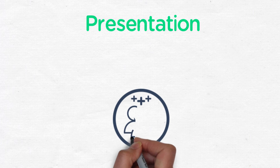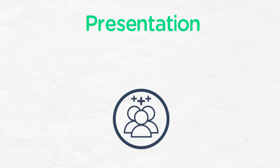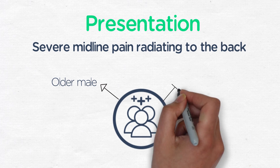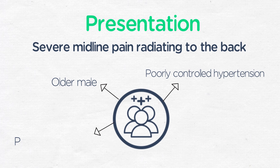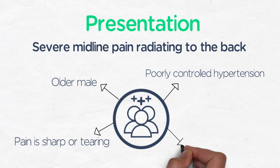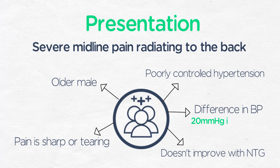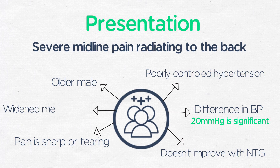Dissection is an extremely painful, acute, and life-threatening condition. It usually presents with severe midline chest pain that radiates to the back, and the typical patient is an older male with poorly controlled hypertension. Pain will be described as sharp or tearing in nature and will not improve with nitroglycerin. If a subclavian artery is affected, there may be a difference in blood pressure in each arm — 20 mmHg is considered a significant difference. If a carotid or spinal artery is affected, there may be focal neurologic deficits. Chest x-ray classically shows a widened mediastinum, although this is only present in about 60% of patients.